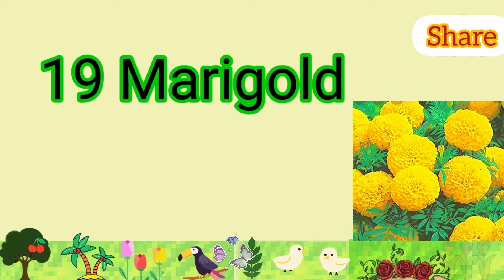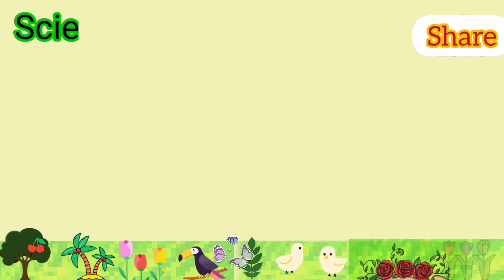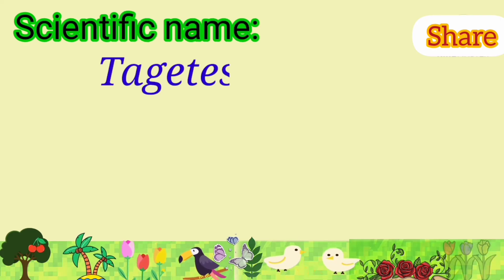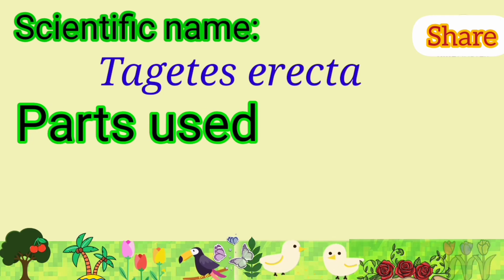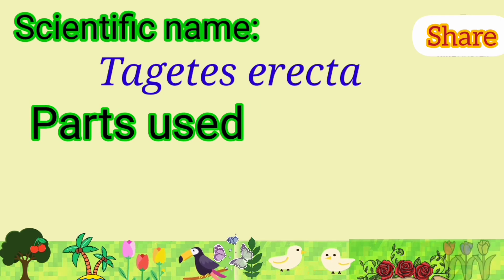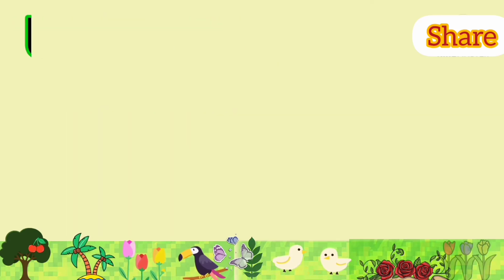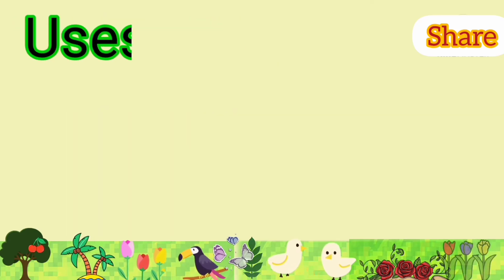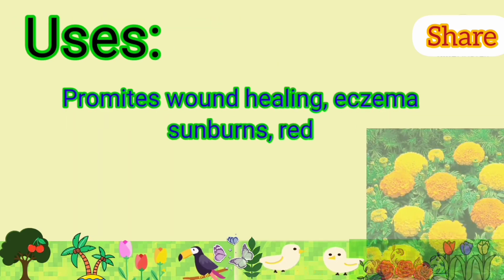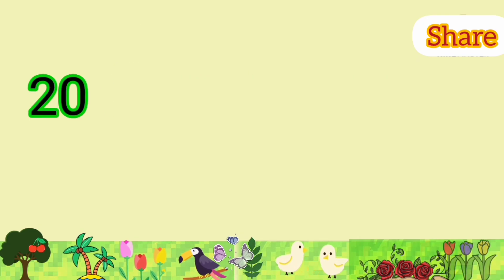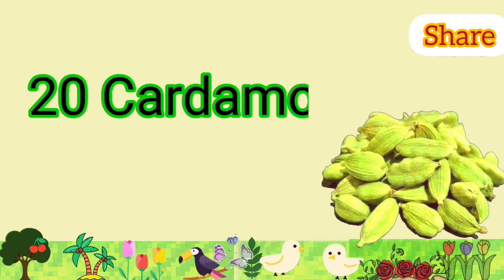Marigold: its scientific name is Tagetes erecta. Parts used are flower and leaves. It is used to promote wound healing, treat eczema and sunburns, reduce eye inflammation, and repel bugs.